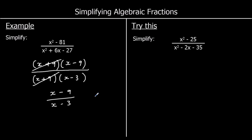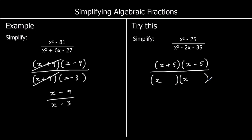And one for you to try — so give this one a go. Again, the difference of two squares on the top. That factorises to (x plus 5)(x minus 5). And the bottom is a quadratic — we'll have an x in both brackets. What multiplies to make negative 35 and adds to give negative 2? That's plus 5 and minus 7. So x plus 5 is a factor of the top and the bottom, so we can cancel it, which leaves x minus 5 over x minus 7.